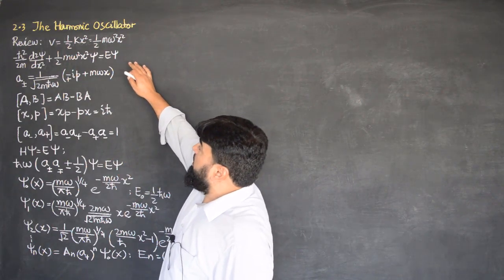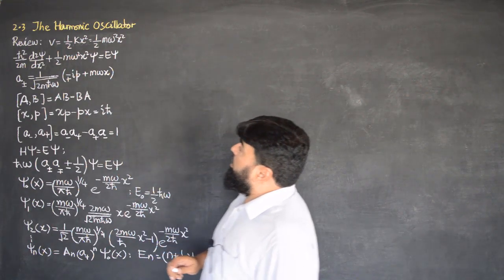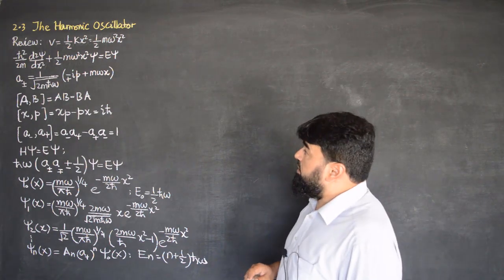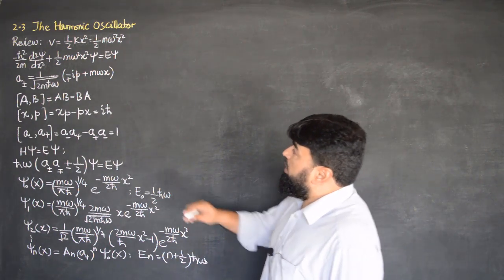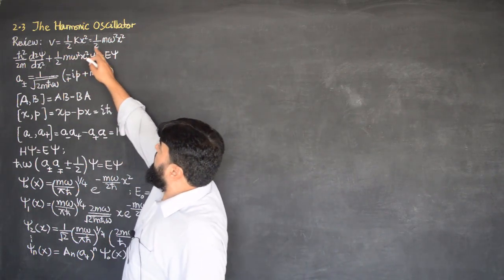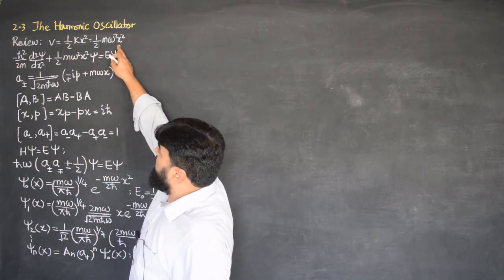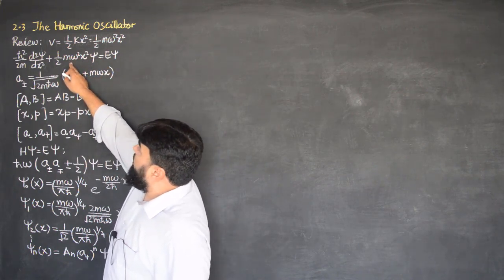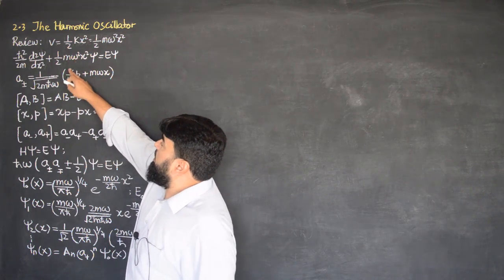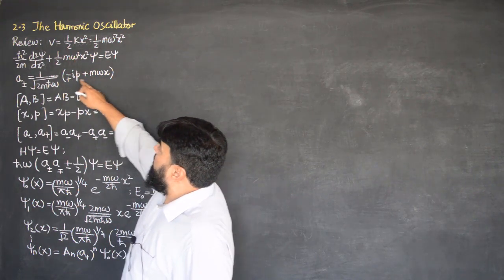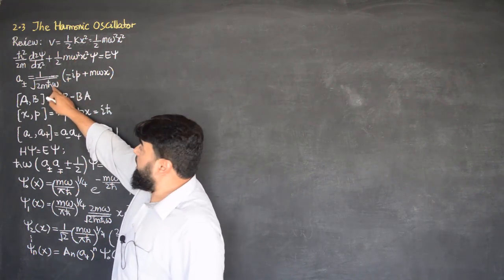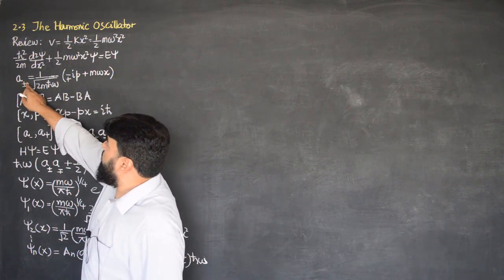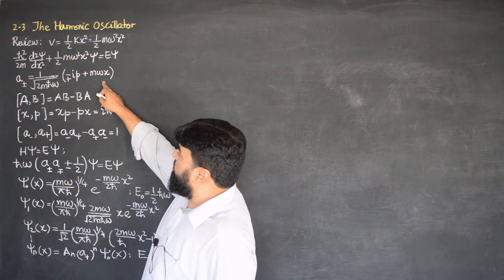In the previous lecture on the harmonic oscillator, let me review what we did earlier. We considered the potential half kx squared. We tried to solve the Schrödinger wave equation based on this potential with the help of the algebraic method, and we derived two operators: the raising operator and the lowering operator.